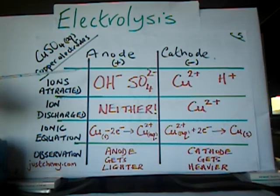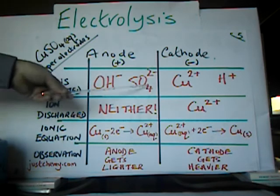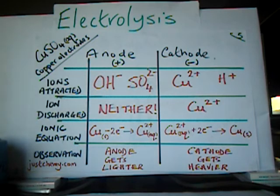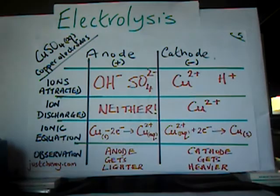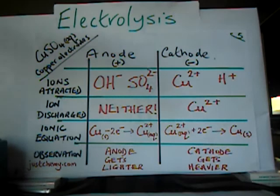Now, in this particular case, when it comes to these ions, which one gets discharged? The answer is neither. And the reason that neither gets discharged is that there is another source of electrons. And in this particular case, that source is quite happy to give the electrons up, and that source is the copper.